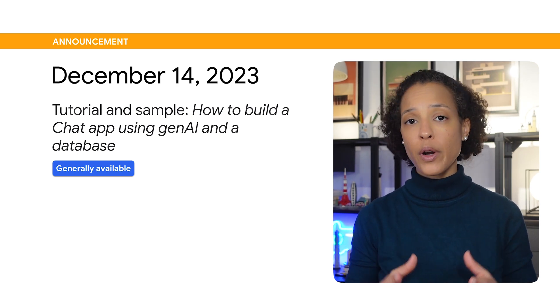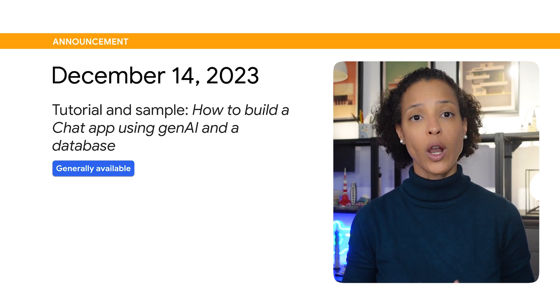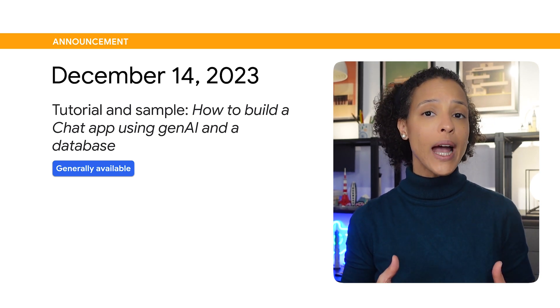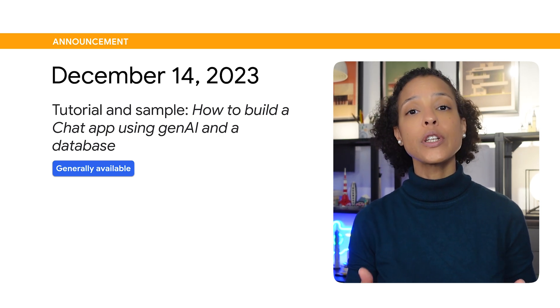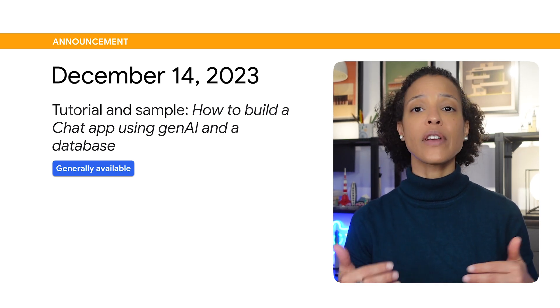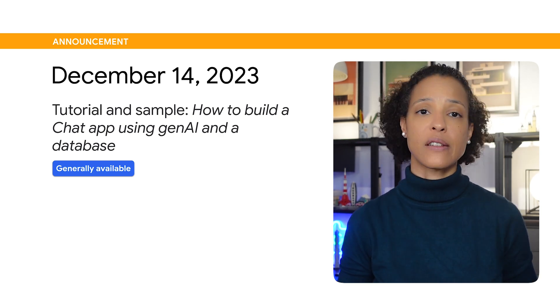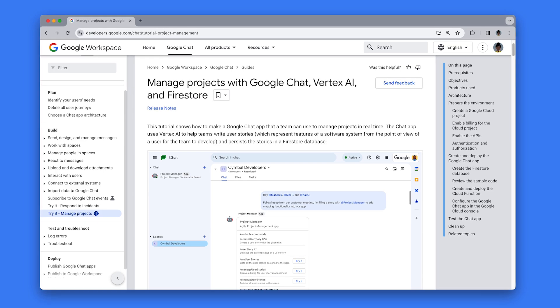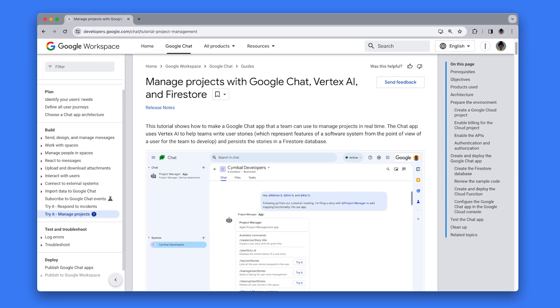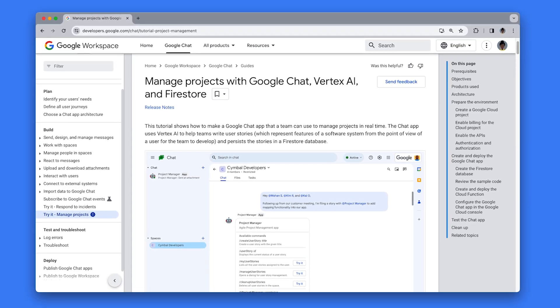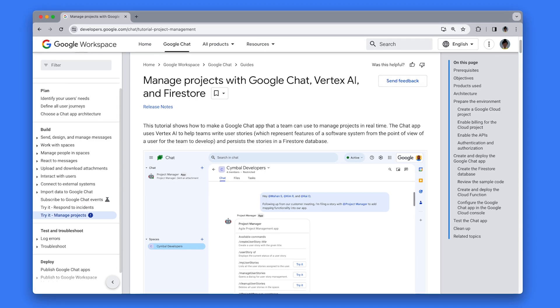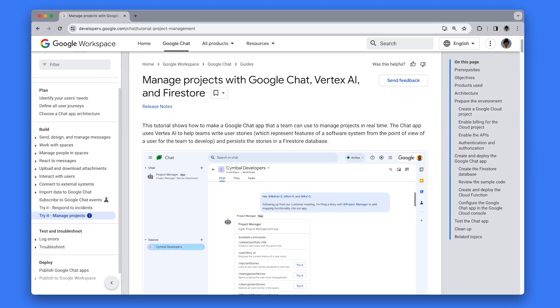We've published a comprehensive tutorial and code sample showing how to build a chat app using Generative AI and a database. The chat app built in this tutorial uses Vertex AI to help write user stories and persist the stories in a Firestore database. We've added the link to the tutorial in the description for this video and invite you to try it out.